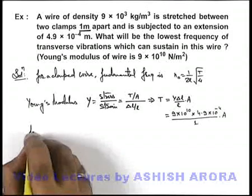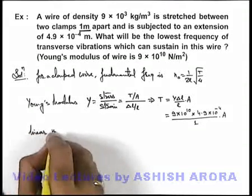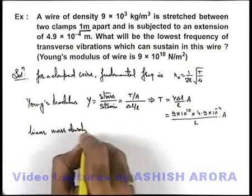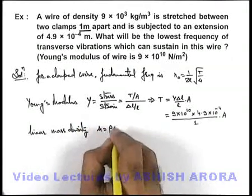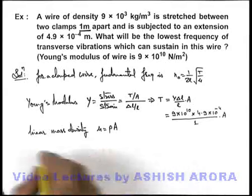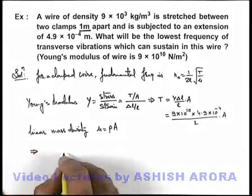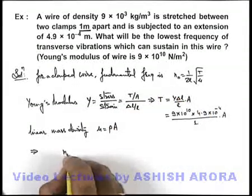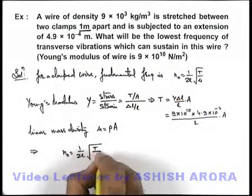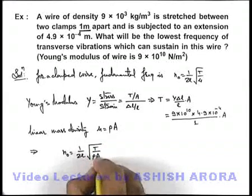And we know that linear mass density of wire μ can be given as density multiplied with the cross sectional area of wire. This implies the fundamental frequency n₀ can be written as 1/(2L) times the square root of T/(ρA).